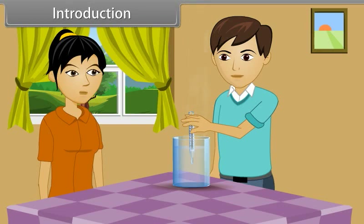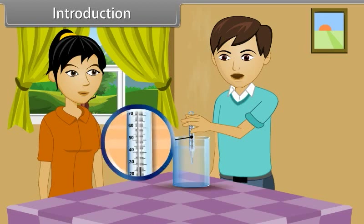Listen, thermometer has mercury in it. When we put the thermometer into hot water, the heat from the water causes the expansion of the mercury. When mercury stops at a point, that point indicates the temperature of the water. It is quite interesting. Students, today we will learn more about the thermal properties of matter.